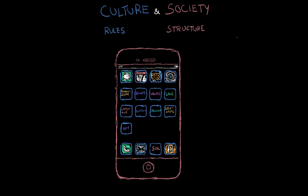Society includes key parts called institutions, and examples include family, education, and politics. These all meet basic human needs. We can think of society as the hardware — anything physical that you can touch, any physical device. So this would be the actual phone, maybe even your protective phone case — the things you can hold in your hand.